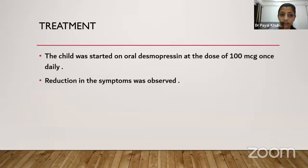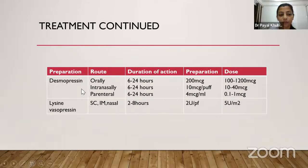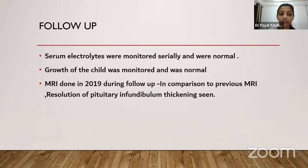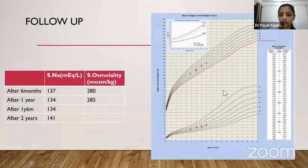Treatment: the child was started on oral desmopressin at 100 micrograms once daily with reduction in symptoms observed. Desmopressin duration of action is 6-24 hours; lysine vasopressin lasts 2-8 hours. Follow-up: serum electrolytes monitored serially and were normal, growth was normal. Repeat MRI in 2019 showed resolution of pituitary infundibulum thickening. Serum sodium and serum osmolarity remained in the normal range.